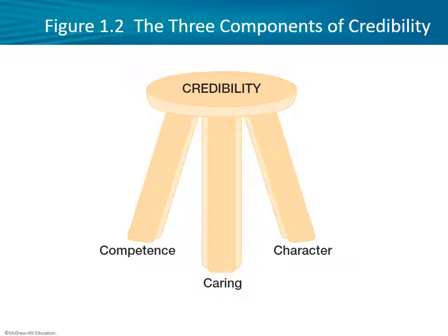Here we have a depiction of a three-legged stool, trying to get across the idea of the components of credibility: competence, caring, and character — three different legs of this stool. Just like a real stool, if we remove one of the legs it suddenly becomes unsafe to sit upon. Likewise, you might have a great deal of competence and be really good at your job, but if the client doesn't think you care about them or your character's bad and you're dishonest somehow, that's not going to matter. The stool will fall. You have to work on all three components.